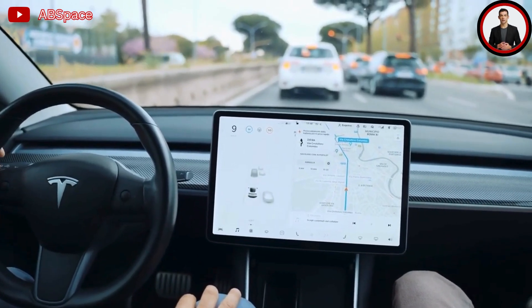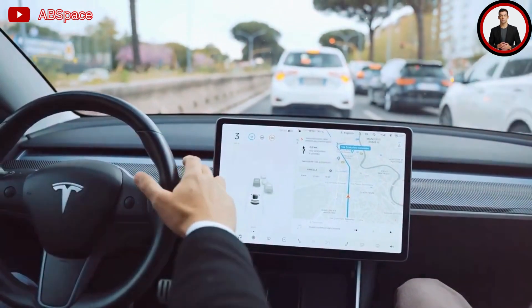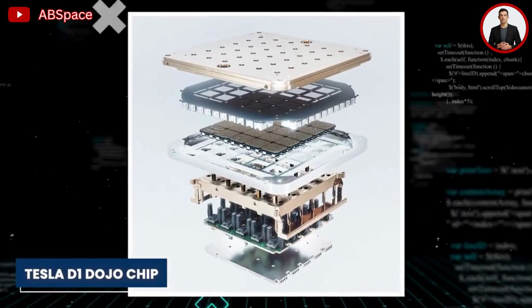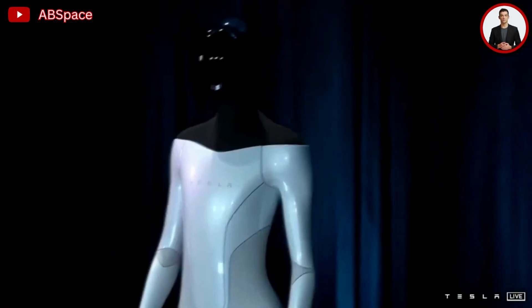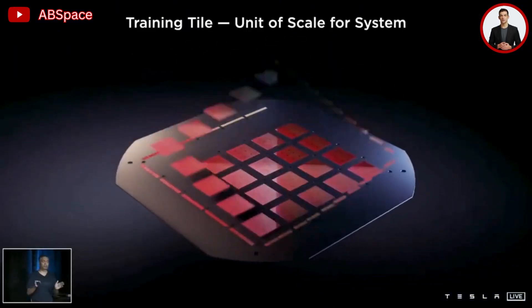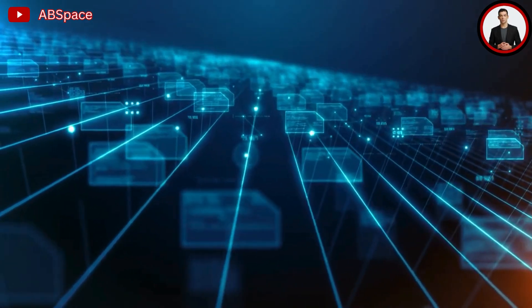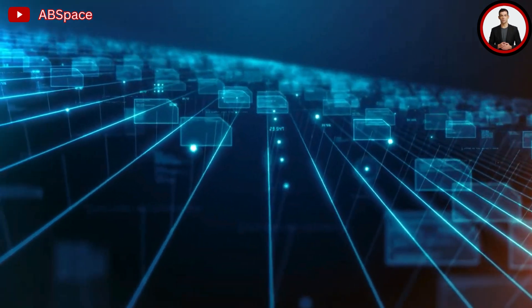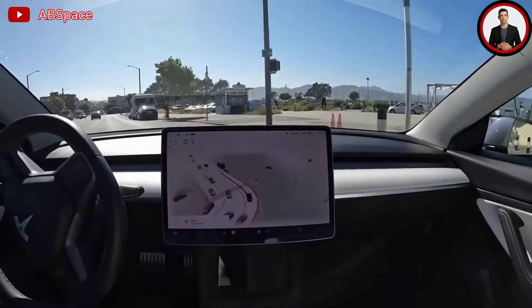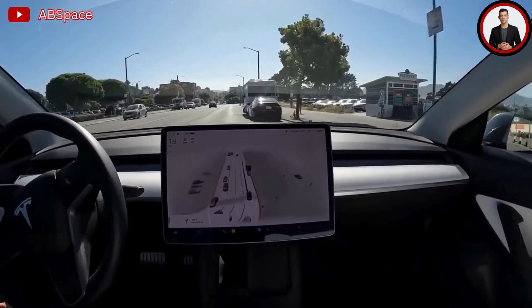The Tesla D1 Dojo chip, this state-of-the-art super processor, provides an incredible bandwidth and computational capacity which is highly needed to train the neural network that powers Tesla's artificial intelligence technology. It is also capable of managing the enormous volumes of video data that are gathered from Tesla's existing fleet of vehicles and used to train its neural nets.